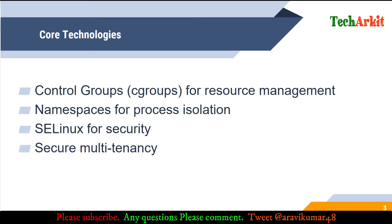What are the core technologies built into RHEL 8 for implementing Linux containers? First, control groups — which we call cgroups — for resource management. Whenever you launch any container it requires some resources, and those resources are managed using cgroups. Second, namespaces for process isolation: each and every container will have its own namespace to avoid direct interaction between multiple containers.